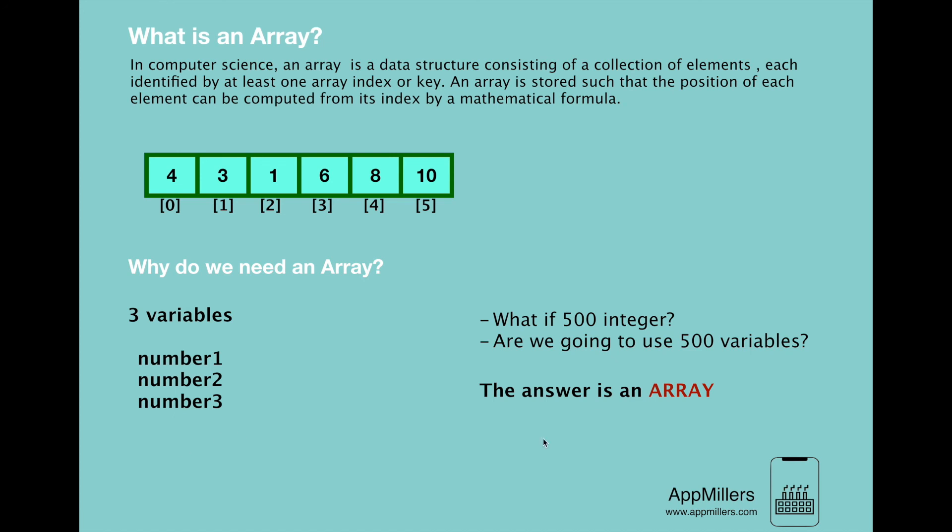An array is a data structure which can store a fixed size collection of elements of the same data type. So instead of declaring 500 variables, we just need to declare an array with the type of integer, keep these variables inside array. Then later on, by using indexes of array, we can access these variables easily.